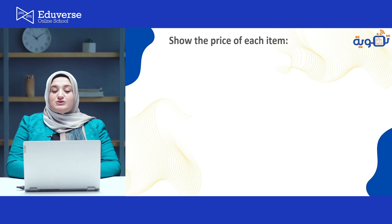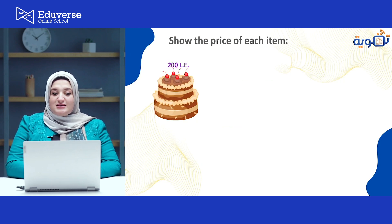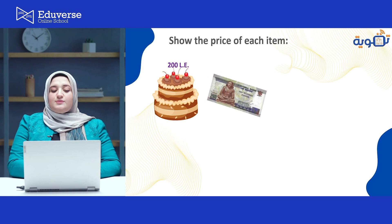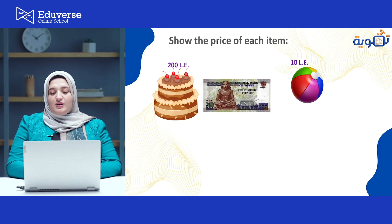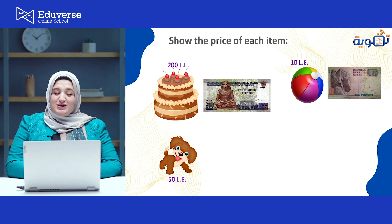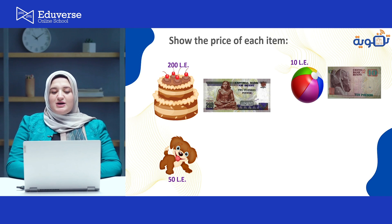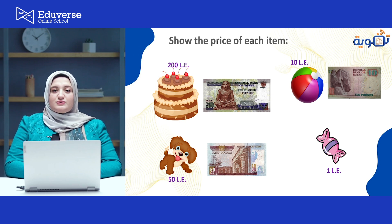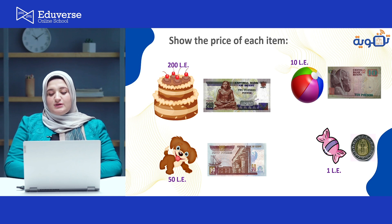If I want to show the price of this cake — this cake is for two hundred pounds — I can buy it with the two hundred pound banknote. What about this bowl? This bowl is ten pounds, so I can buy it with the ten pound banknote. What about this little toy? This toy is for fifty pounds, so I can buy it with the fifty pound banknote. And this sweet is for one pound, so I can buy it with the one pound coin.